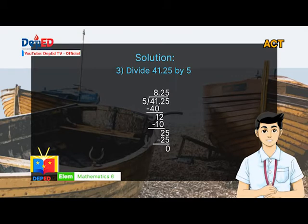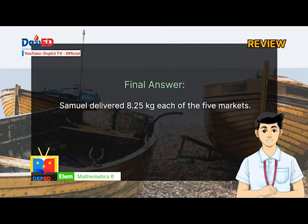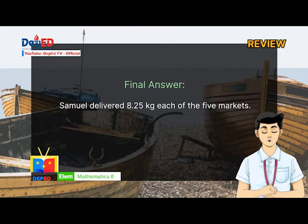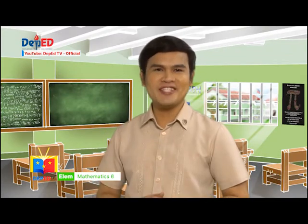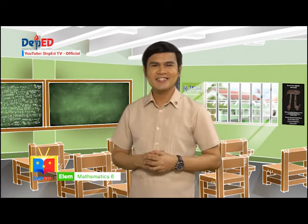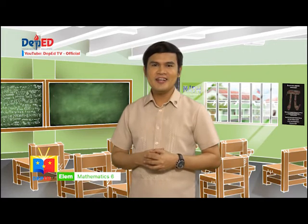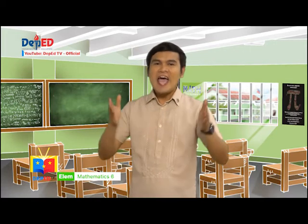The last step in solving the problem is R — Review and check your answer. The other way to check is to look back at your solutions or do working backwards by solving at the end and inversing all the operations. The answer to the problem is that Samuel delivered 8.25 kilograms to each of the five markets. You got it, Mateo. You definitely followed the steps in solving word problems. If you got the same answer, I'll give you all an excellent clap.